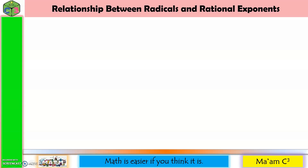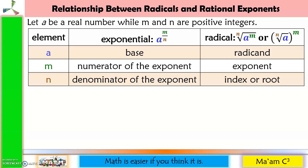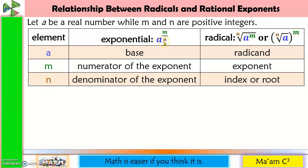Relationship between radicals and rational exponents: Let a be a real number, while m and n are positive integers. We have three columns — element, exponential form, and radical form. The element a, which is the base in exponential form, becomes the radicand in radical form. The element m, which is the numerator in exponential form, becomes the exponent in radical form. While the element n, which is the denominator in exponential form, becomes the index or root in radical form.